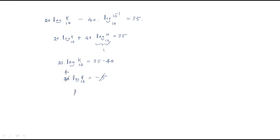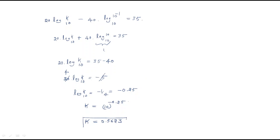From 20·log(K) = -5, dividing by 20 gives log(K) = -1/4 = -0.25. Therefore K = 10^(-0.25) = 0.5623. So the open-loop transfer function is G(s) = K/s² = 0.5623/s².